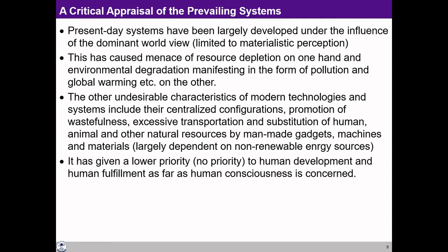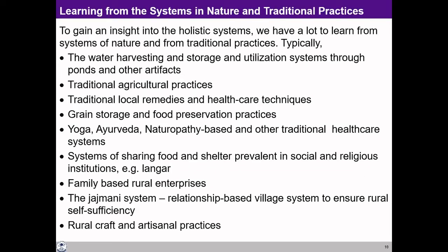If we want to come out of these problems, some of the criteria for working on production systems we have suggested need to be made more specific and detailed. There is a huge possibility that if we develop production systems, technologies, and all that in the light of this human society and human goal, we have a lot to learn from the systems in nature and from traditional practices. Nature already has so many processes going on through which a sustainable kind of nature has existed for millions of years.